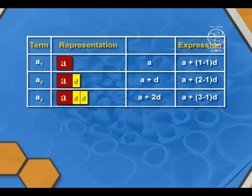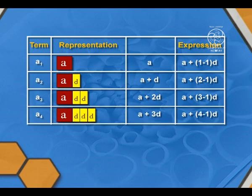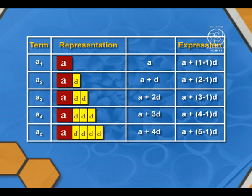In the third term, we can write it as A plus (3 minus 1) times D. Yes, we can write this as A plus (4 minus 1) times D, and the fifth term will be A plus (5 minus 1) times D.